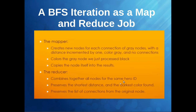The reducer then combines all nodes for the same hero ID. For example, if hero ID 2 is connected to 3, 4, 5, and 6, the reducer combines all those nodes, preserves the shortest distance obtained when moving from the original hero ID node to connections, and preserves the original list of connections for that node. That's what we achieve using the mapper and reducer.